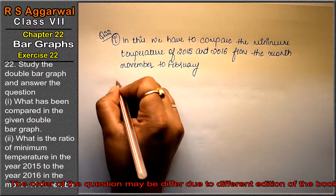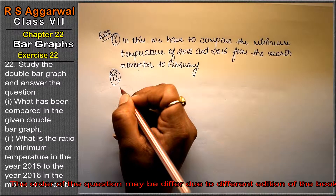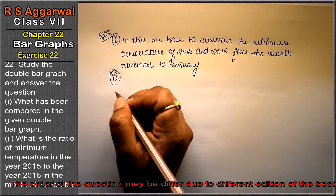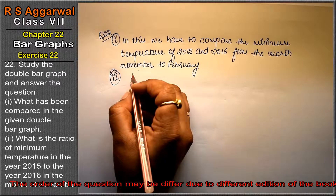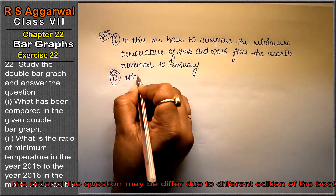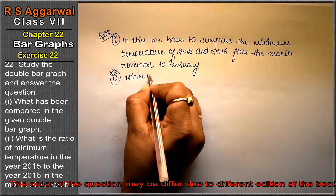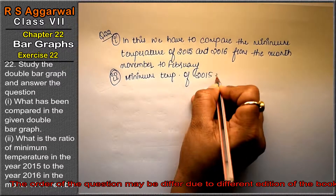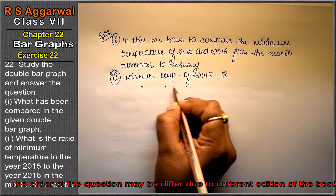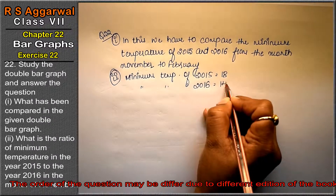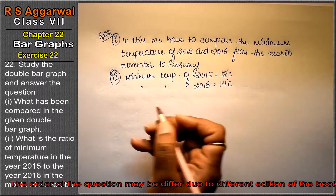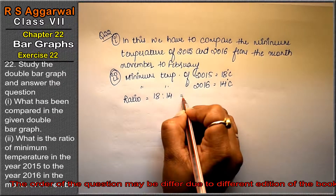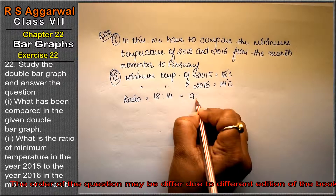Second part: what is the ratio of minimum temperature in the year 2015 to the year 2016 in the month of November? The minimum temperature of 2015 is 18 degrees and minimum temperature of 2016 is 14 degrees Celsius. So the ratio is 18:14. We can simplify by dividing by 2. That means 9:7 is the answer.